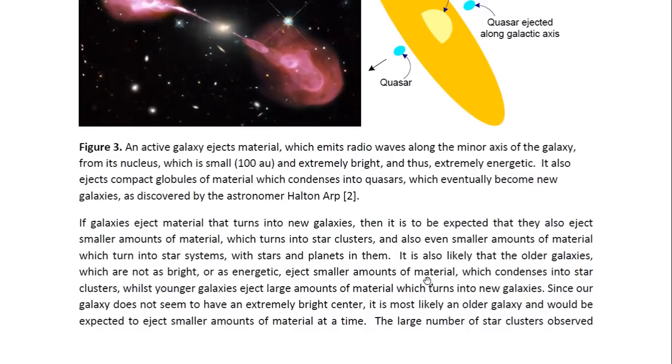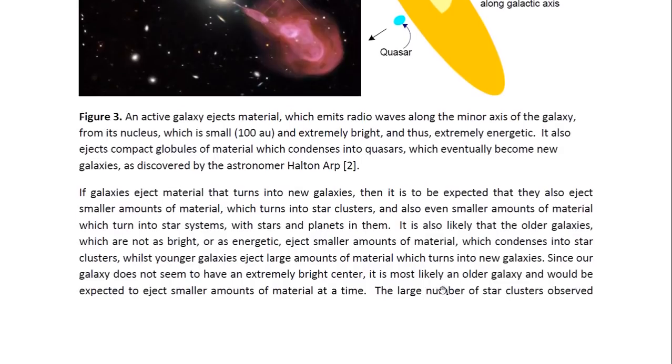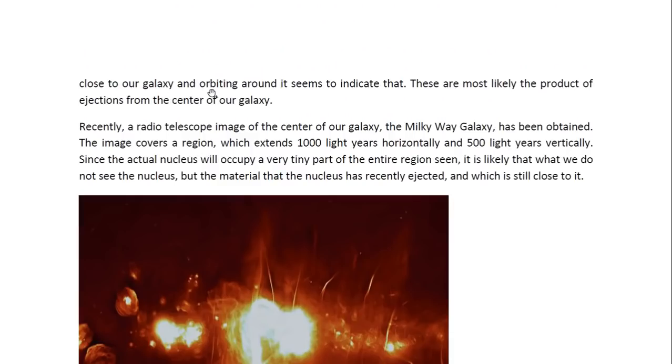If galaxies eject material that turns into new galaxies, then it is to be expected that they also eject smaller amounts of material which turns into star clusters, and also even smaller amounts of material which turn into star systems with stars and planets in them. It is also likely that the older galaxies, which are not as bright or as energetic, eject smaller amounts of material which condenses into star clusters, whilst the younger galaxies eject large amounts of material which turns into new galaxies. Since our galaxy does not seem to have an extremely bright center, it is most likely an older galaxy and would be expected to eject smaller amounts of material at a time. The large number of star clusters observed close to our galaxy and orbiting around it seem to indicate that these are most likely the product of ejections from the center of our galaxy.